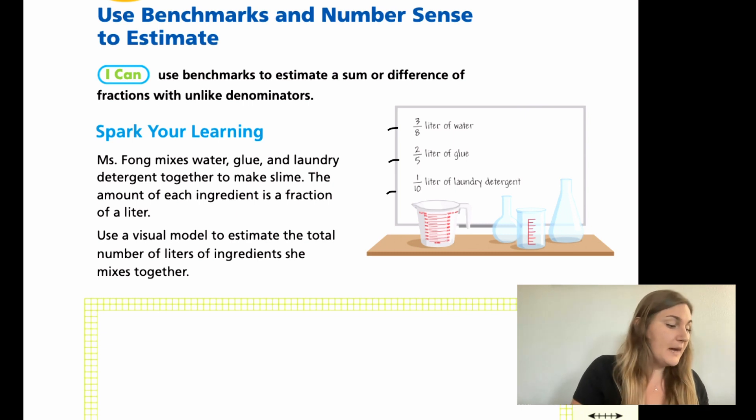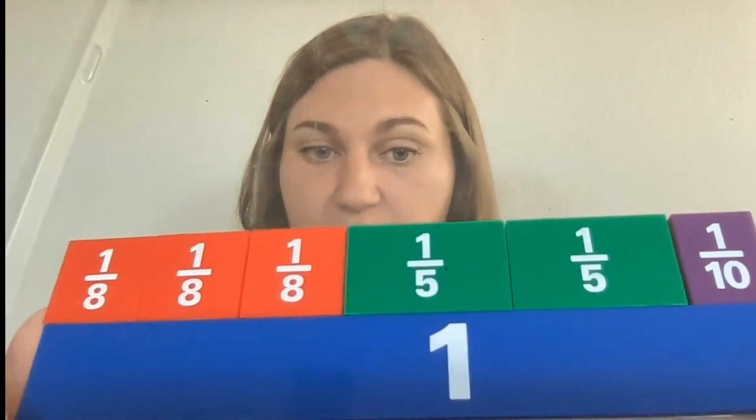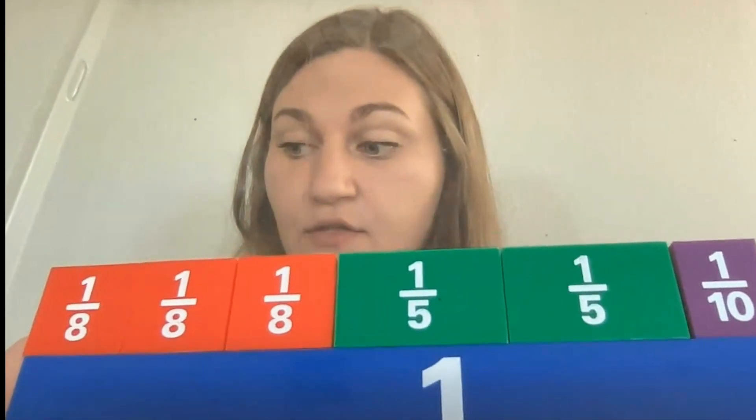My visual model that I'm choosing to use are my little fraction pieces. My fraction pieces are set up, and I'm comparing them to 1. My red pieces here, my 1/8s, is going to be the 3/8 of a liter of water. Notice there are three 1/8 pieces to be the 3/8.